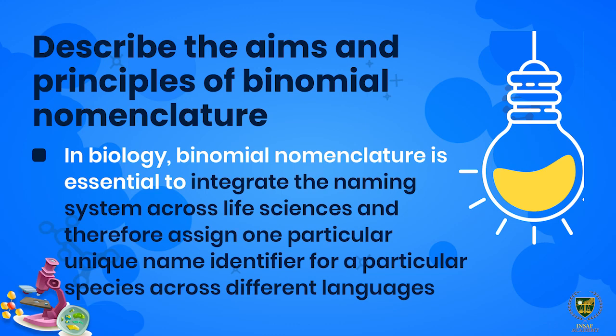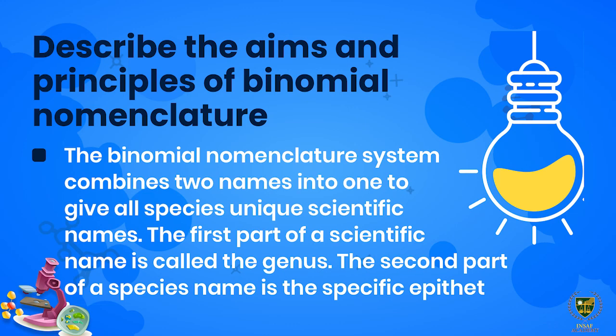The binomial nomenclature system combines two names into one to give all species unique scientific names. The first part of a scientific name is called the genus, and the second part is called the specific epithet. In binomial nomenclature, the scientific name has two parts: the generic name (genus name), which always starts with a capital letter, and the species name, which always starts with a small letter.